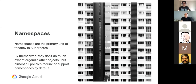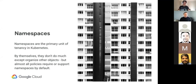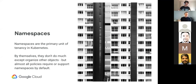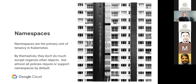Namespaces are the primary unit of tenancy in Kubernetes. What that means is that there are lots of different definitions of what a tenant is — every company, every organization will have their own definition. But namespaces are a building block to sort of bring all of those together without having to worry too much about what every individual company wants. On their own, kind of like the bare walls in an apartment, they don't really do much except organize other objects. For example, you can't have two objects of the same name in the same namespace; if they're in different namespaces, you can. But as it turns out, all kinds of other policy objects use them by default or sometimes require them.